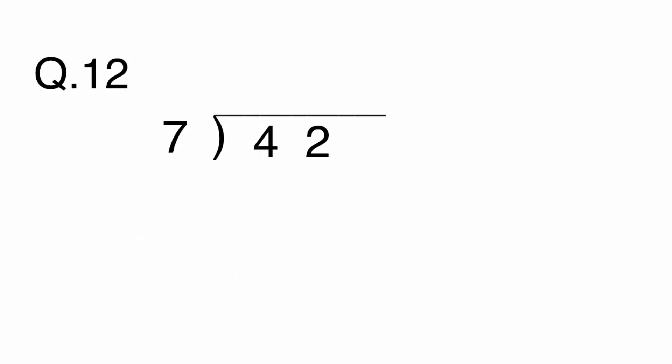Let's use the division column method. 42 divided by 7 equals 6. 6 times 7 equals 42. The answer is A, 6.